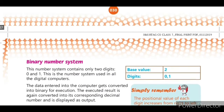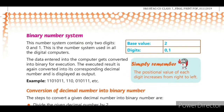The binary number system has base value 2 and contains only two digits: 0 and 1. When we enter data, the computer converts it into binary numbers for execution, since the computer understands only binary language. The executed result is again converted back into decimal for display as the output.